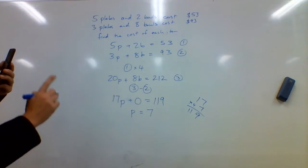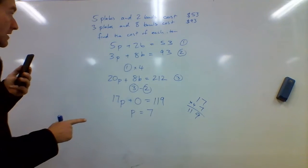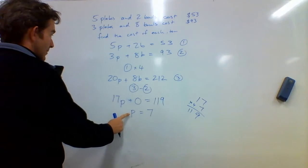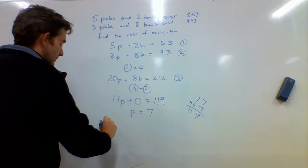Now I haven't finished the question yet because it says find the cost of each item. I've just worked out that plates cost $7. Bowls, then, I will need to find out by substituting this back into one of those equations. I'll do it into the first one.